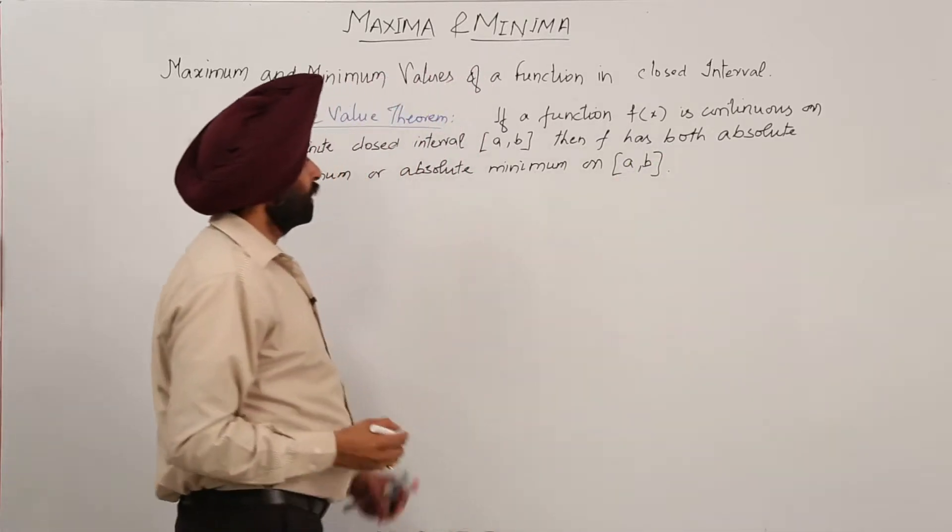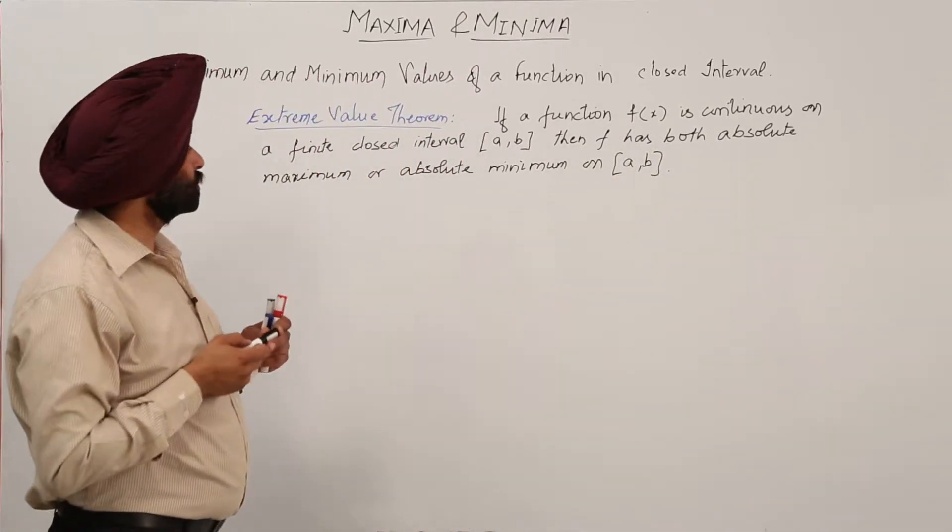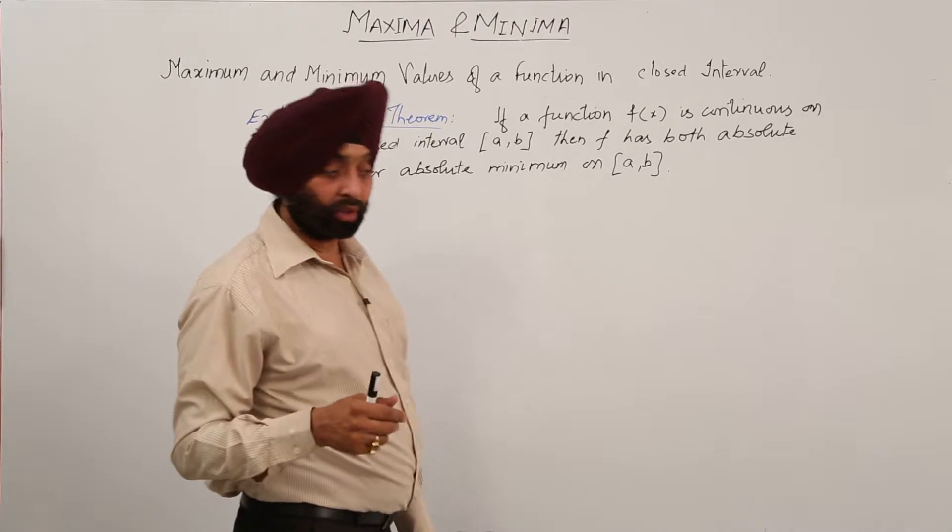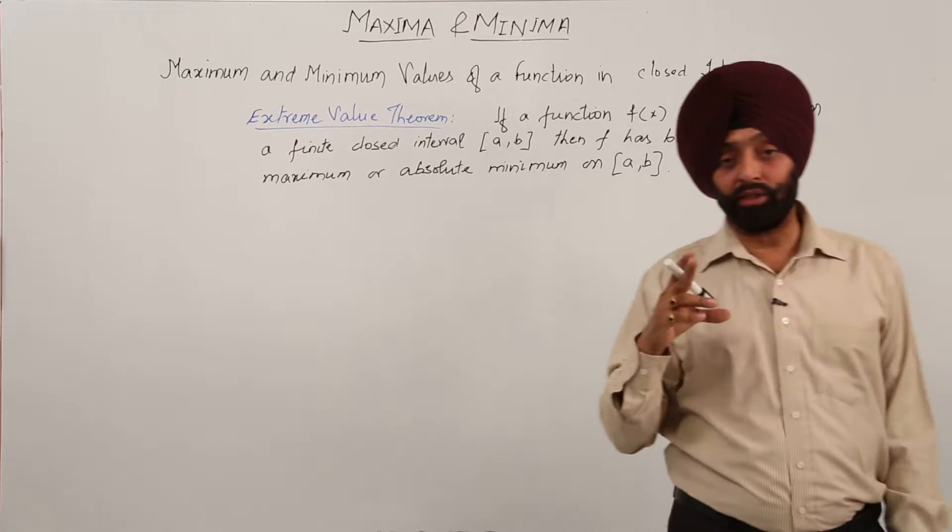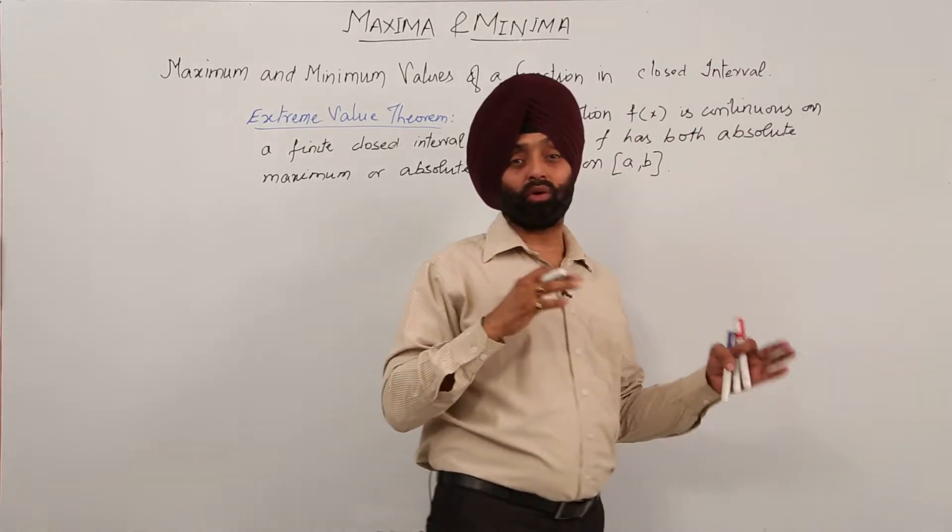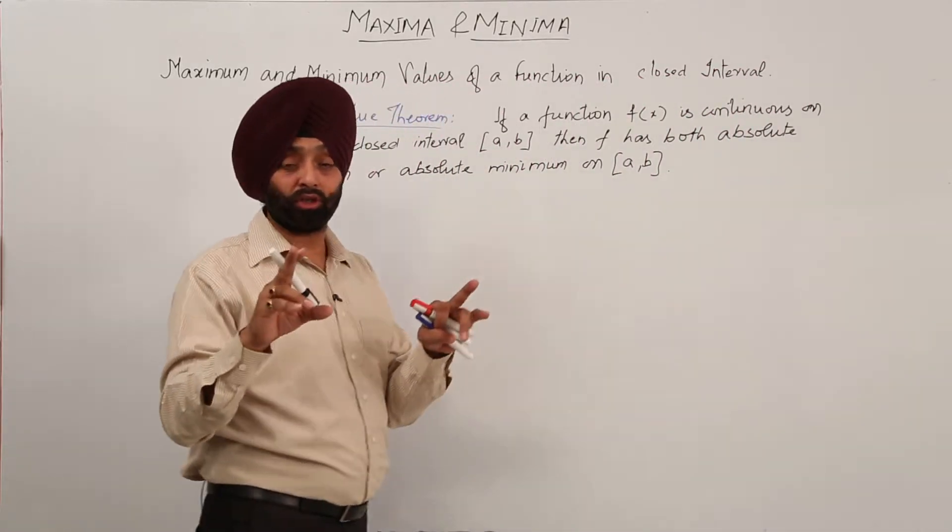Now what this means. If a function is continuous on a finite closed interval, number one we have already gone through the mean value theorems. We have gone through the increasing and decreasing part. So if a function is continuous, it is always continuous on the closed intervals.